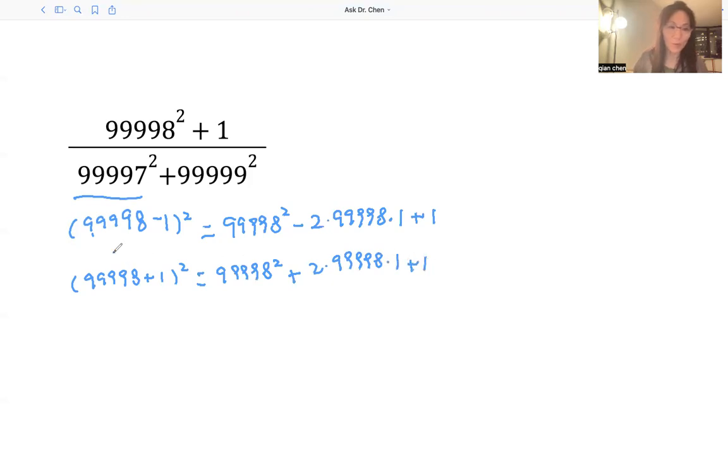If we add those two, because this is addition, what do we get? We see those two canceled. We add those two, we get 2 times 99998 squared, then plus 1 plus 1, which is 2.